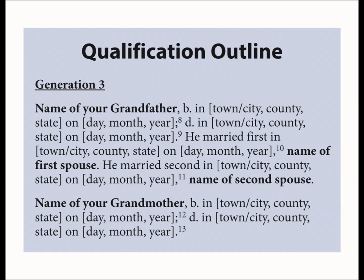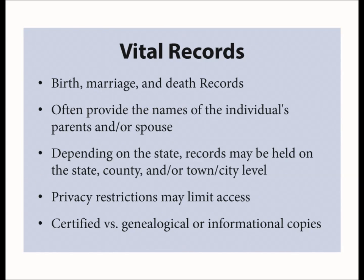When developing your qualification outline, remember to include information for second marriages even if the marriage is outside of your bloodline. Note that the outline includes the name of the spouse as well as information for their birth, marriage, and death. When you compile your qualification outline, it is essential to remember that the society genealogists will base their assessment of your ancestral line using the documentation you provide. We first suggest locating all possible vital records — birth, marriage, and death records — for each generation. Since vital records often provide specific information about an individual such as place and date of birth as well as information about their parents, these records can be used to connect several generations.